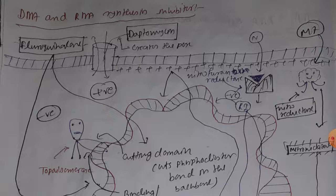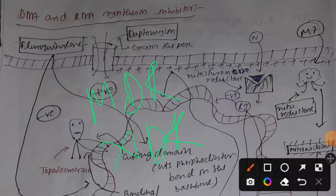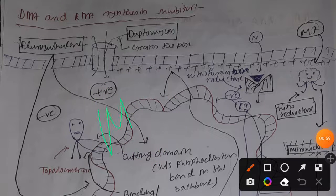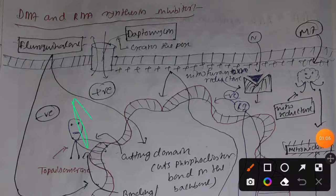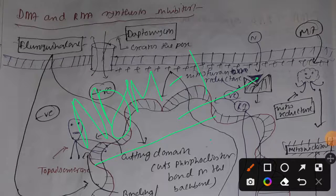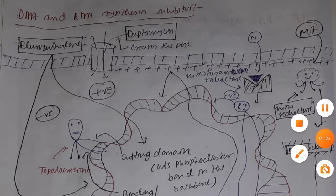Then we will discuss the concept of bacterial resistance, covering multi-drug resistant, extensively drug resistant, and totally drug resistant bacteria, as well as MRSA (methicillin-resistant Staphylococcus aureus) and NDM-1. This lecture series is all about various kinds of antibiotics. Let's start with our first discussion regarding DNA and RNA synthesis inhibitors. Antibiotics are synthesized by bacteria.